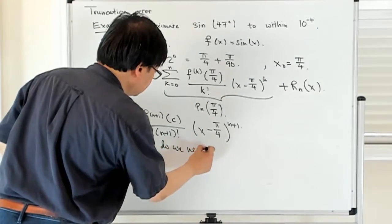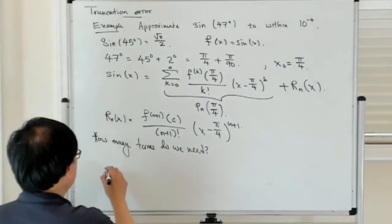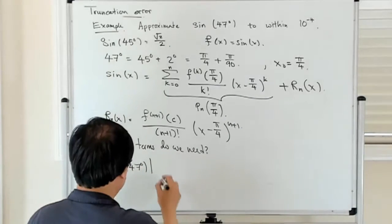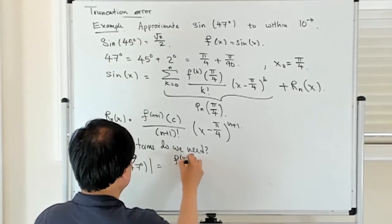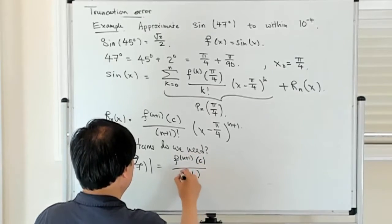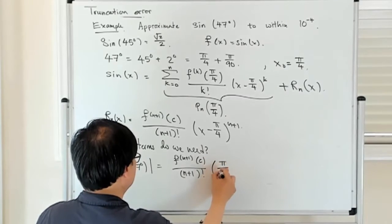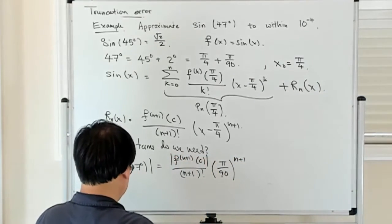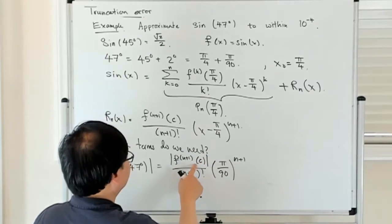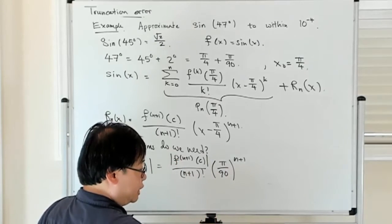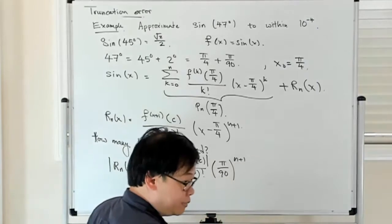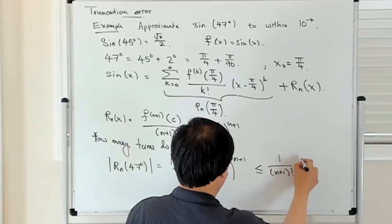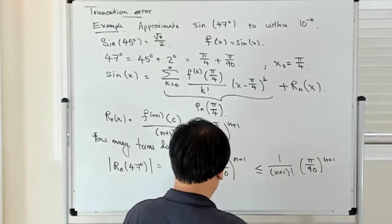So we know that the absolute value of rn at 47 degrees is equal to f n plus 1 at some unknown point c over n plus 1 factorial, times π over 90 to the n plus first power. And then I'm going to have to take the absolute value here, and I'm going to bound the n plus first derivative of sine by 1. So I know this is guaranteed to be less than or equal to 1 over n plus 1 factorial, π over 90 to the n plus 1.